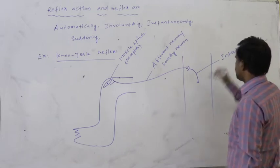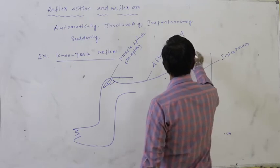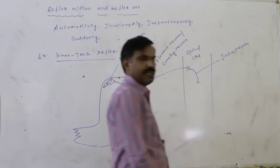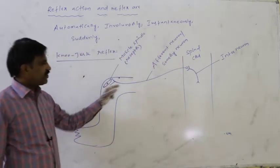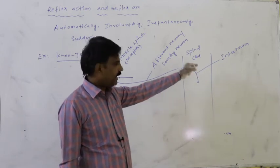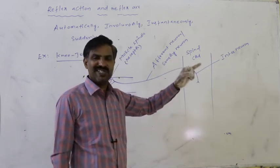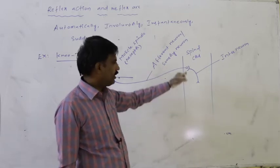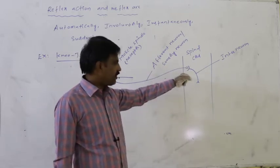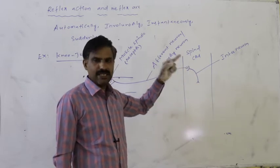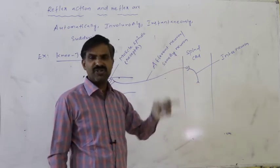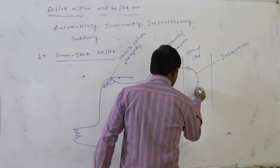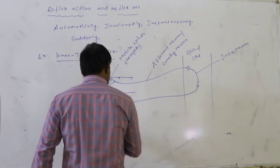This afferent neuron is terminated at the interneuron, which is present in the spinal cord. Whenever information reaches the interneuron, it is processed and analyzed there. According to this information, the interneuron generates motor information.